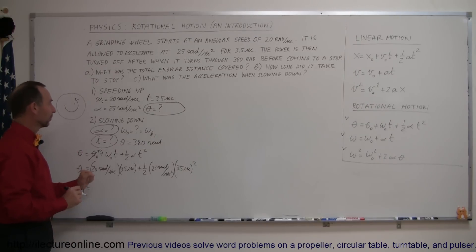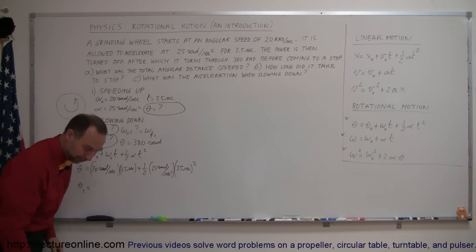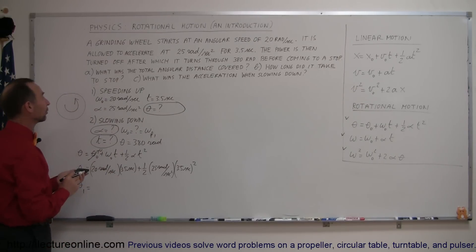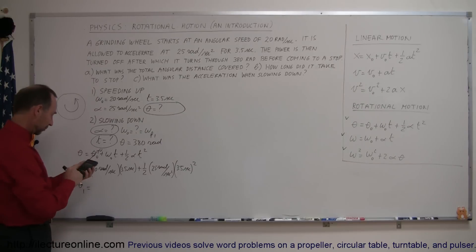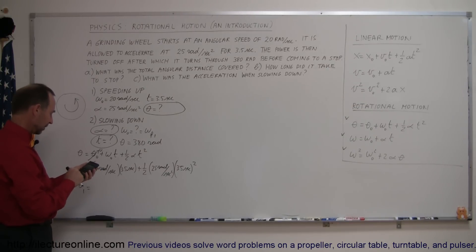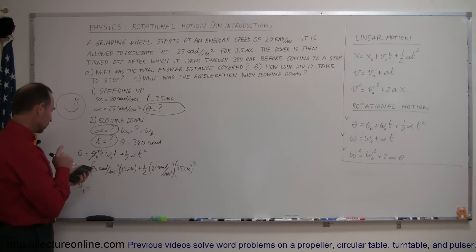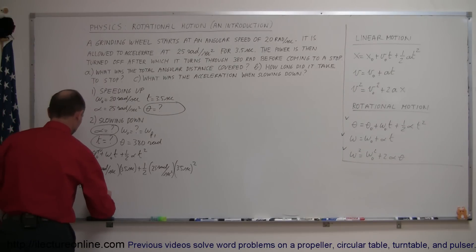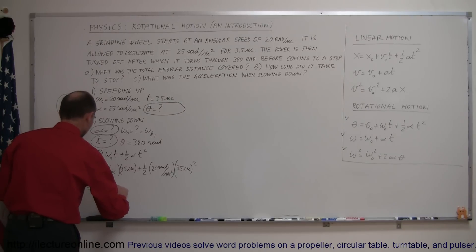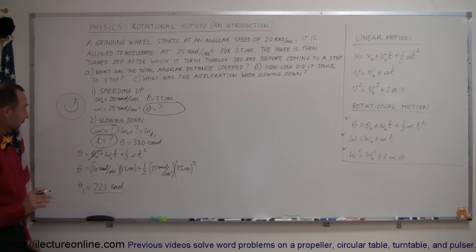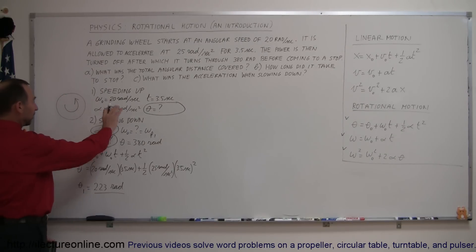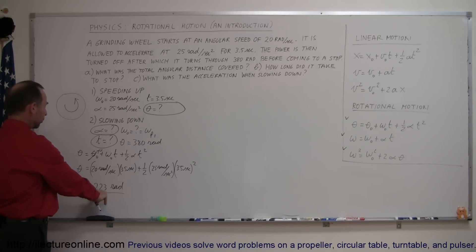We'll call this theta sub one — the angular distance covered during the first part of the problem. So we have 3.5 squared times 25 times one-half, and we add that to 3.5 times 20, which is 70. That gives us theta sub one equals 223 radians — the total angular distance covered in part one.